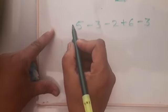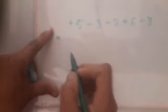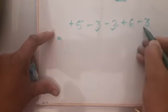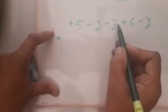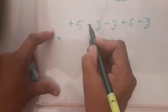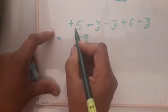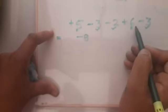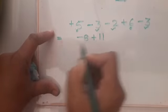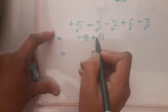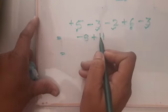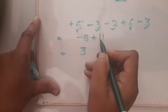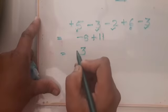Say you have 5 minus 3 minus 2 plus 6 minus 3. No sign is given for 5, so consider it as plus. Find the numbers with the same sign: minus 3, minus 2, and minus 3 — add them: 3 plus 2 plus 3 is 8, giving minus 8. The positive numbers are plus 5 and plus 6 — add them: 5 plus 6 is 11, giving plus 11. Now the numbers have opposite signs, so subtract: 11 minus 8 is 3, and 11 is the bigger number with a positive sign. So the answer is plus 3.